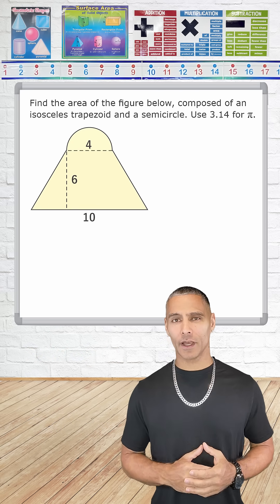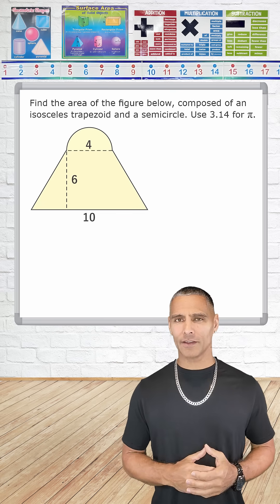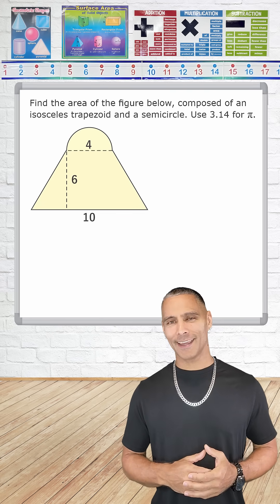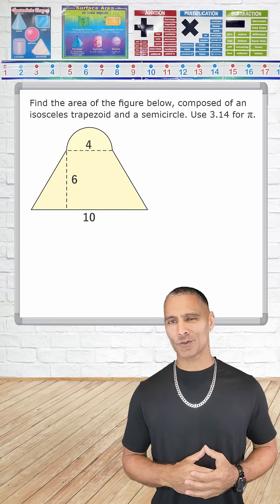In this video, what we're going to do is find the area of a composite shape by recognizing its two component shapes, in this case, a semicircle and an isosceles trapezoid.